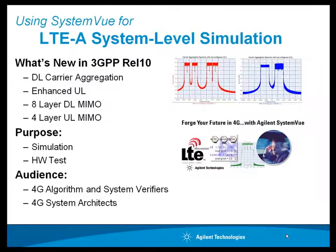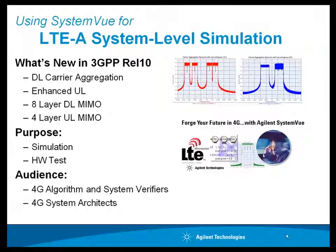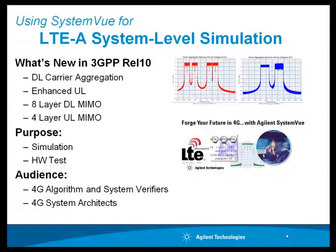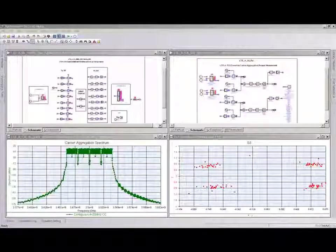Agilent System View 2011 and its new 3GPP LTE Advanced Release 10 library supports downlink carrier aggregation with up to 5 carriers with 100 MHz bandwidth, enhanced uplink, 8 layer downlink MIMO, as well as 4 layer uplink MIMO.